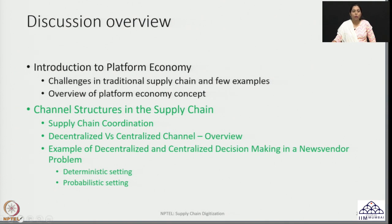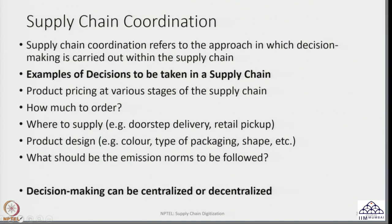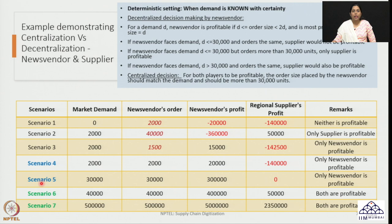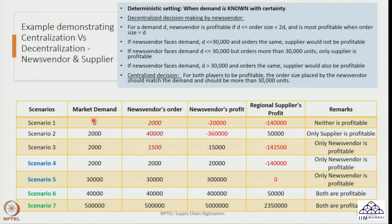When we talk about what kind of decision making we are trying to understand, we have already seen that there are a variety of decisions that can take place in a supply chain. In this specific context we are looking at the decision making related to how much to order. In the last example we considered seven different scenarios looking at a deterministic setting for demand, and we concluded that in some cases one party is profitable and not the other, while in some cases both parties are profitable.